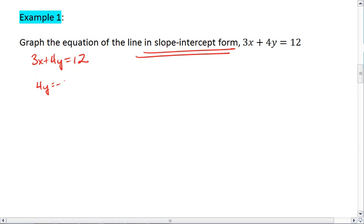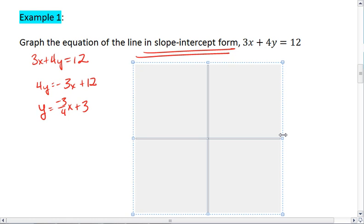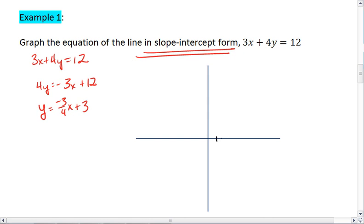We get 4y equals negative 3x plus 12. y equals negative 3 fourths x plus 3. The slope-intercept form helps us with graphing because it makes it a lot easier to figure out exactly what this equation looks like on a graph.